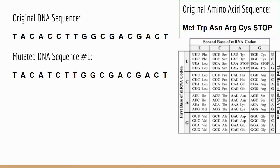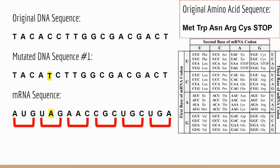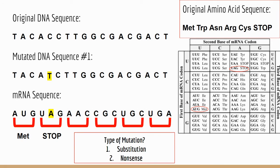Here's our first mutated DNA sequence. We compare it to our original and find the mutation is this thymine right here — we've changed just one base, so this is a substitution. More specifically, since both cytosine and thymine are pyrimidines, this would be a transition. We transcribe it into our mRNA strand, add our reading frame, and start translating. The result is much shorter than our original amino acid sequence. Because we added a premature stop codon, this is also a nonsense mutation. So in the box: substitution and nonsense mutation.